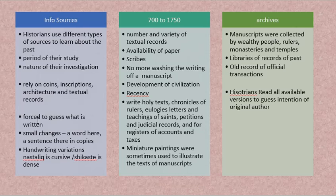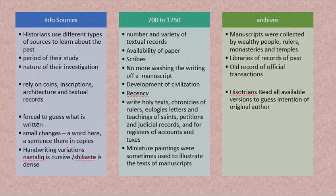We said we will talk about the years 700 to 1750, considered as the medieval period of a thousand years. The period before is ancient Indian history and the period after is modern Indian history. During this medieval period we have a large number and variety of textual records. Why? Because writing was easier — instead of manuscripts that had to be washed and rewritten, we had paper. In some places the printing press was almost being introduced. This is a more recent period, so records are reasonably available.